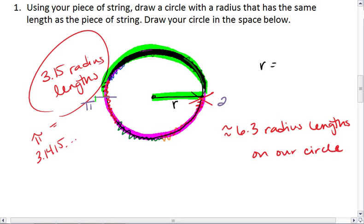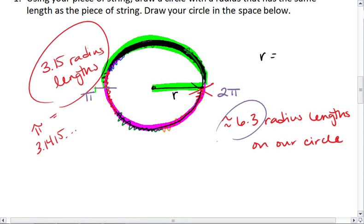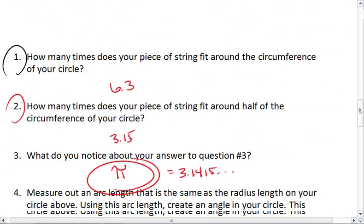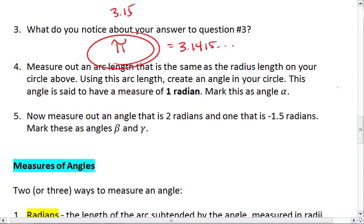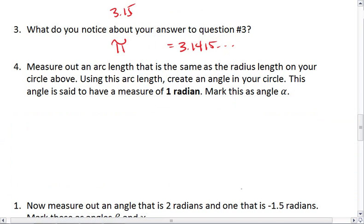And two pi radius lengths will fit around the entire circle. That's where we get 6.3 or approximately 6.28. Now we're going to do something a little cool here. And on our circle, here's our pretty circle.